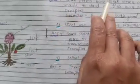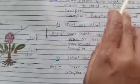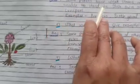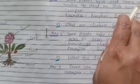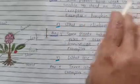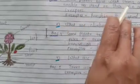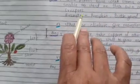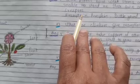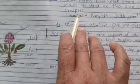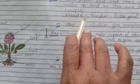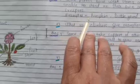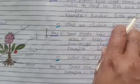What are creepers? Give an example. Some plants have weak stems and are unable to stand on their own — these are called creepers. Example: pumpkin, bottle gourd.